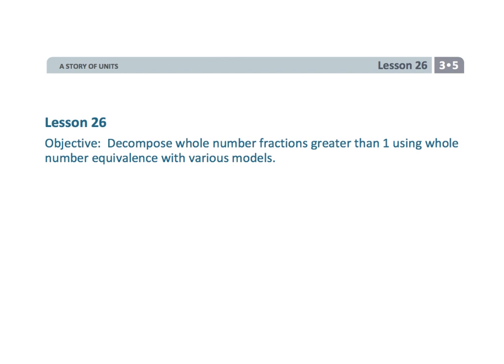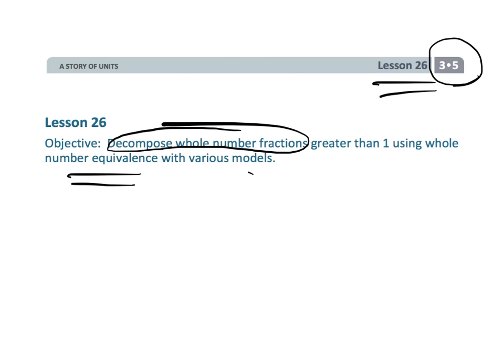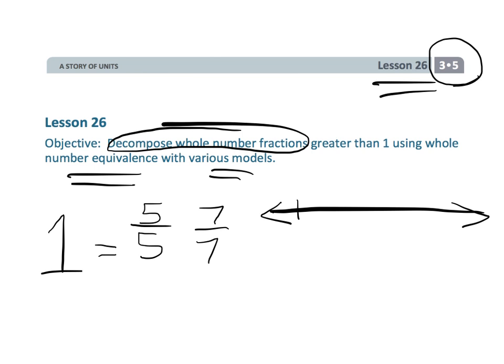Alright, this is grade 3, module 5, lesson 26, and we are going to be decomposing whole number fractions greater than 1 using the idea of number equivalents with various models. Basically, the idea is we're going to learn that one whole is like 5 fifths, or maybe it's 7 sevenths, and then we're going to represent that on a number line from 0 to 1, and then we're going to represent it using number bonds.